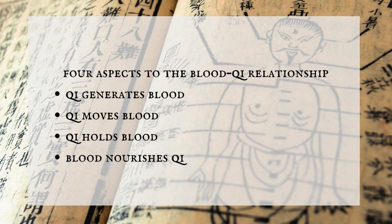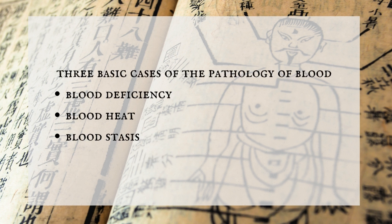There are four aspects to the blood-qi relationship: qi generates blood, qi moves blood, qi holds blood, and blood nourishes qi. The three basic cases of blood pathology are blood deficiency, blood heat, and blood stasis.